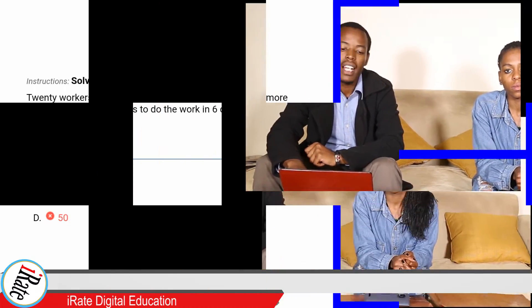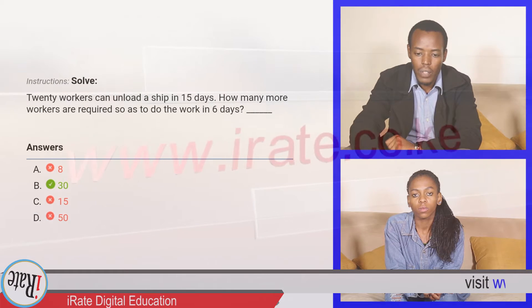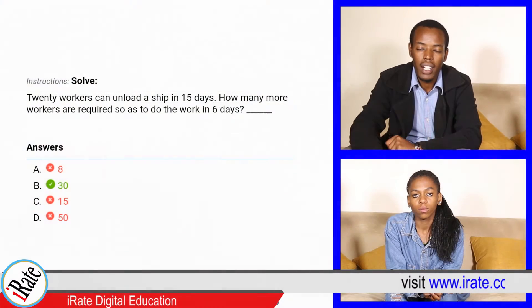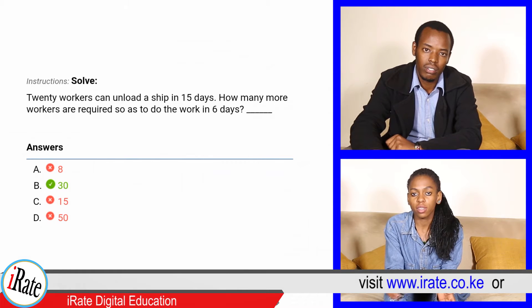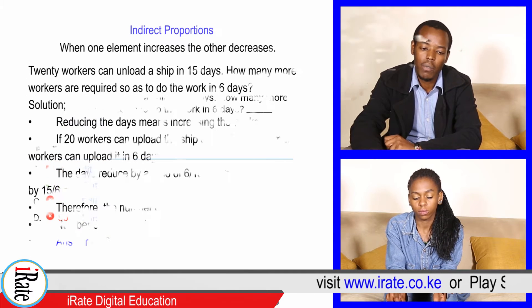Solved. 20 workers can unload a ship in 15 days. How many more workers are required so as to do the work in 6 days? The answer is 30. Correct.